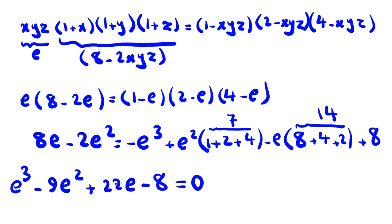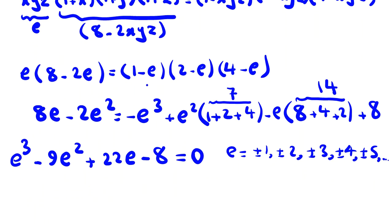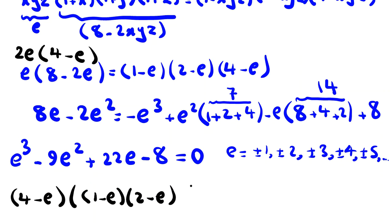We can try e = ±1, ±2, ±3, ±4, ±5 to see which equals zero. Because we have a product, we can factor from 2: 2e(4 - e). Because we see 4 - e, we can write 4e - 4e, and take these to the right: (1 - e)(2 - e)(-2e).